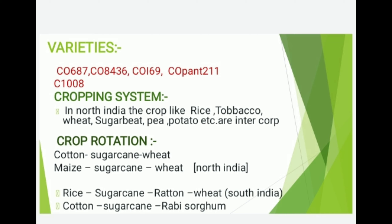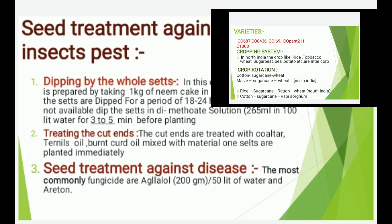Crop Rotation: Cotton – sugarcane – wheat; Maize – sugarcane – wheat. In Northern India: rice – sugarcane – ratoon – wheat. Cotton – sugarcane – rabi sorghum in Southern India.